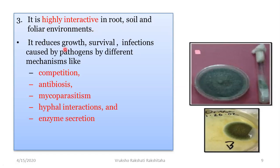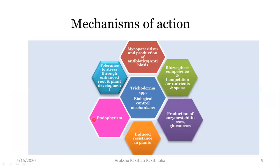Trichoderma reduces the growth, survival and infections caused by pathogens through different mechanisms. Let us look into these mechanisms: they are competition, antibiosis, mycoparasitism, hypo-interactions and enzyme secretion. This pic gives a glimpse of all the different mechanisms of action shown by Trichoderma.